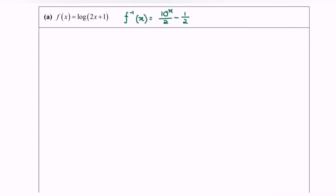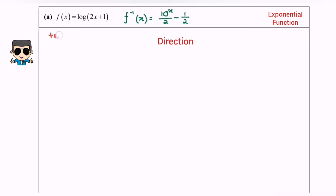The basic idea is we have to refer to the power of 10. If the coefficient of the power is positive, then our graph will be towards the right. If the coefficient of the power is negative, our graph will be towards the left.